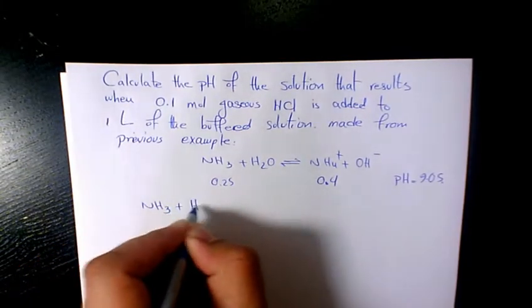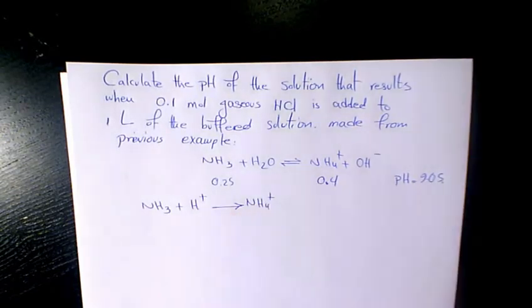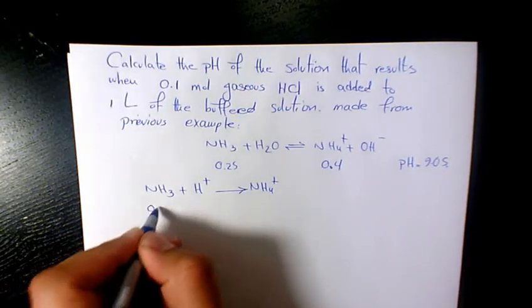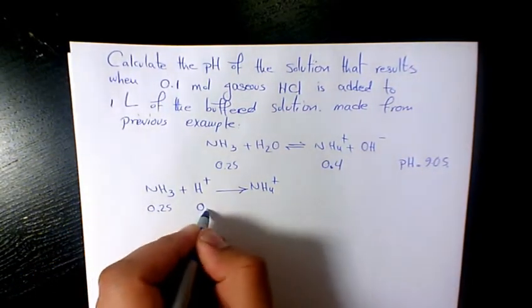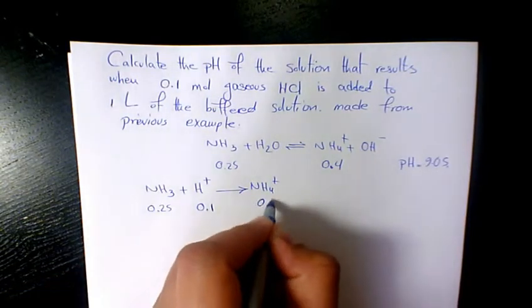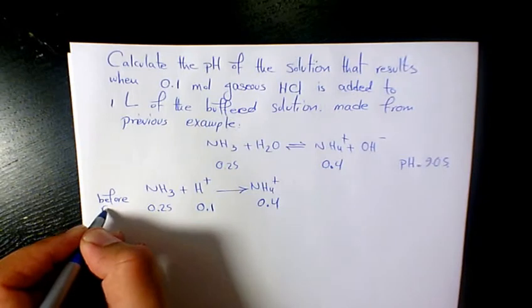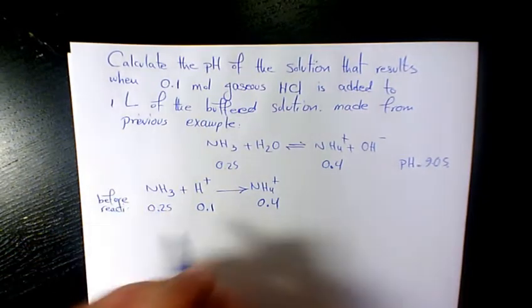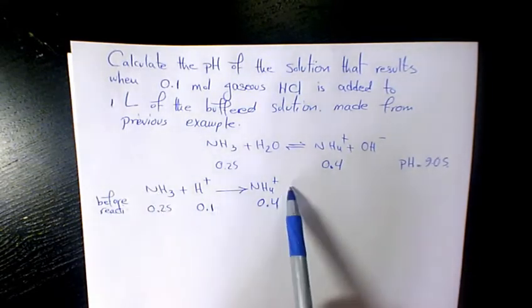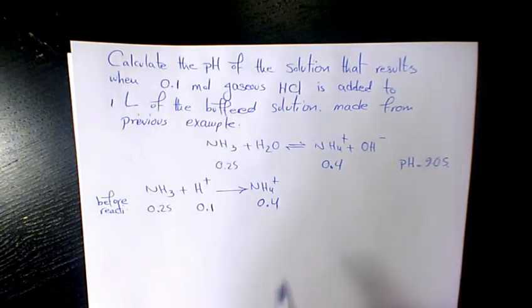So it's going to be NH3 + H+ that's going to produce NH4+. So we have for one liter: we have 0.25, you have 0.1, and here we have 0.4 in the beginning. This is before neutralization reaction. 0.1 is coming from HCl, 0.25 is from concentration of ammonia, and here the concentration of ammonium chloride from the previous example.